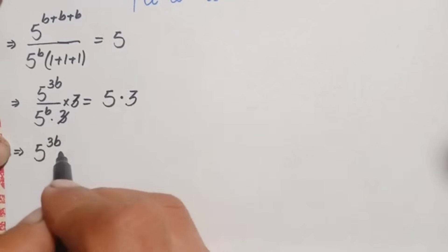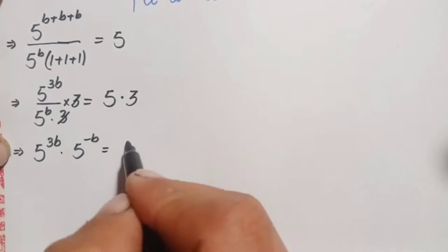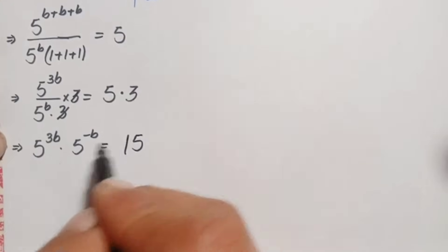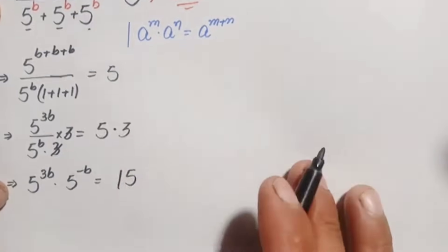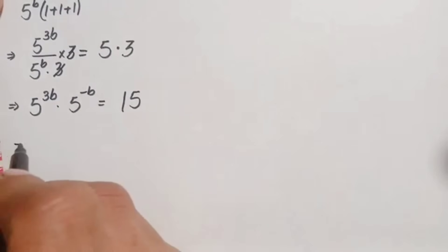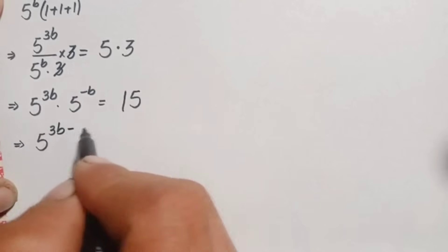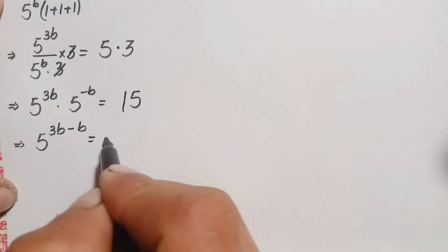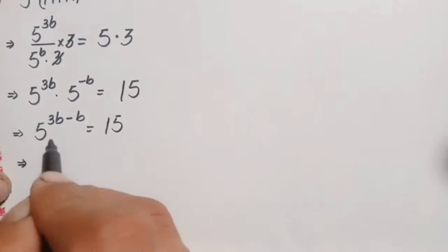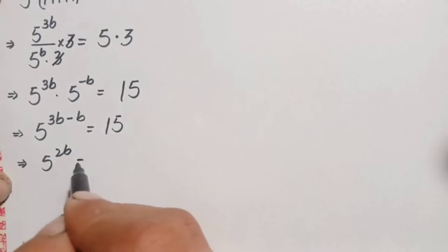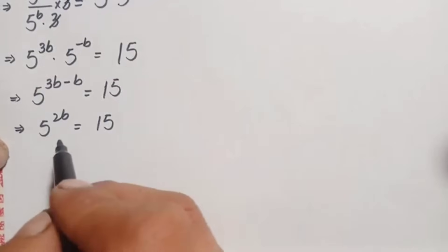Moving 5 raised to power b to the numerator changes the sign of its power to negative, so this becomes 5 raised to power 3b times 5 raised to power negative b is equal to 5 times 3, which is 15. Using the same base exponential identity and adding the powers, this becomes 5 raised to power 2b is equal to 15.